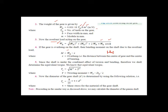The resultant load Wr = √(Wn² + Wg² + 2·Wn·Wg·cosφ). If the gear is overhung on the shaft, the bending moment of the shaft equals M = Wr × x, where x is the overhang — the distance between the center of the gear and the center of the bearing. Since the shaft is under the combined effect of torsion and bending, the torque T equals Wt × dg/2, where dg is the pitch circle diameter of the gear.